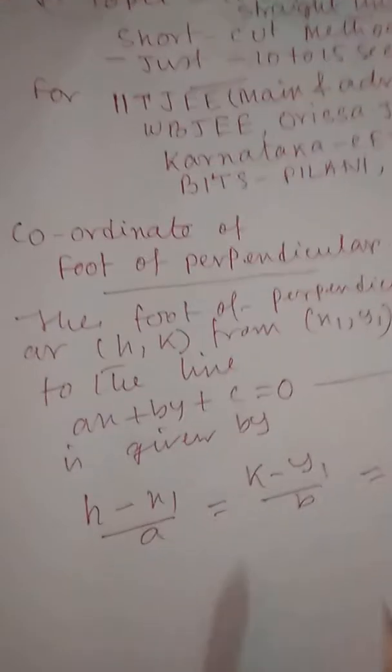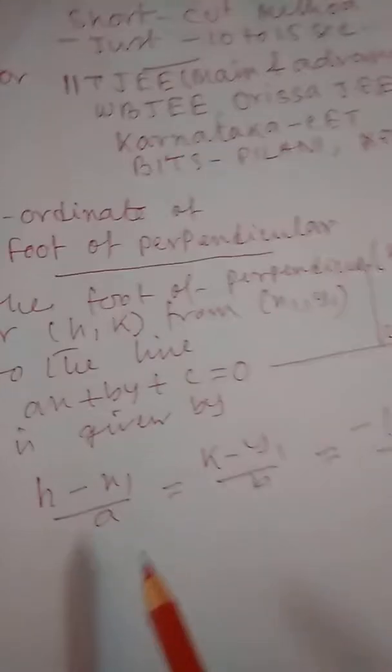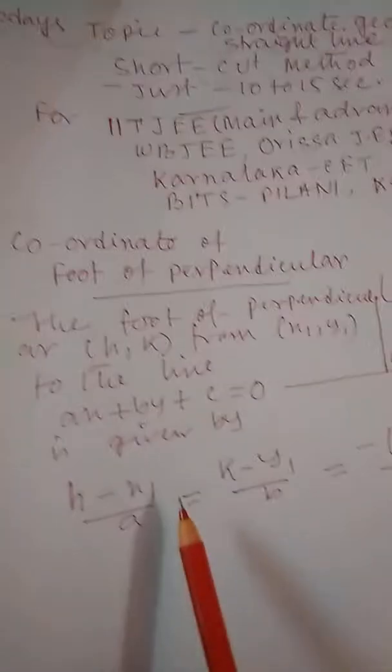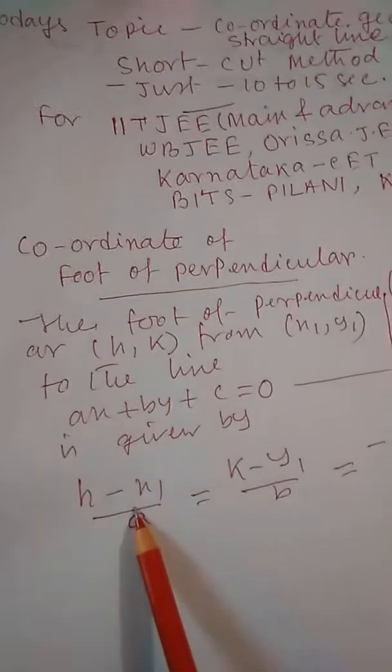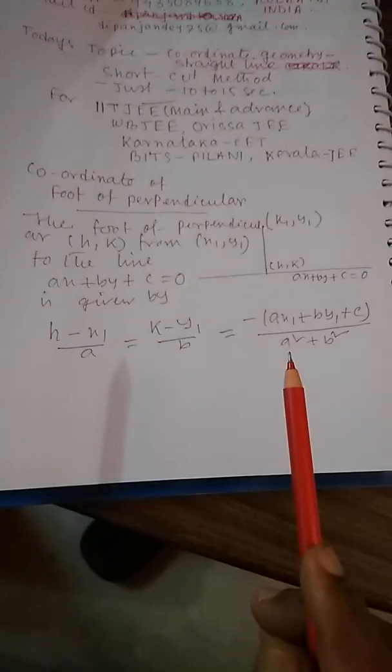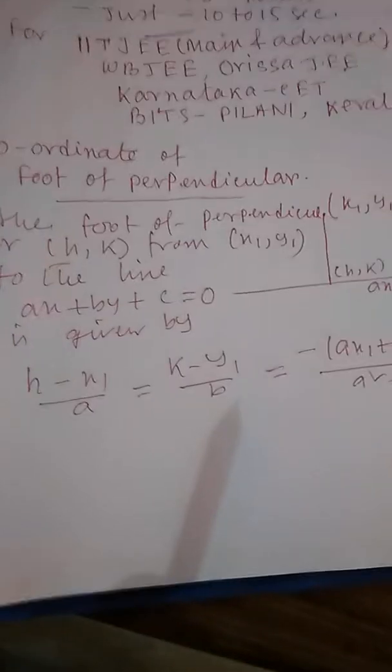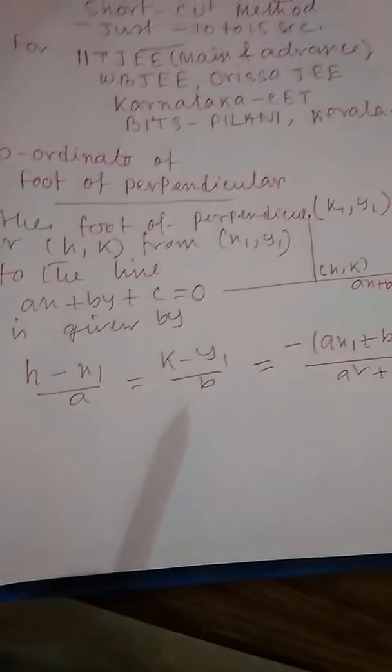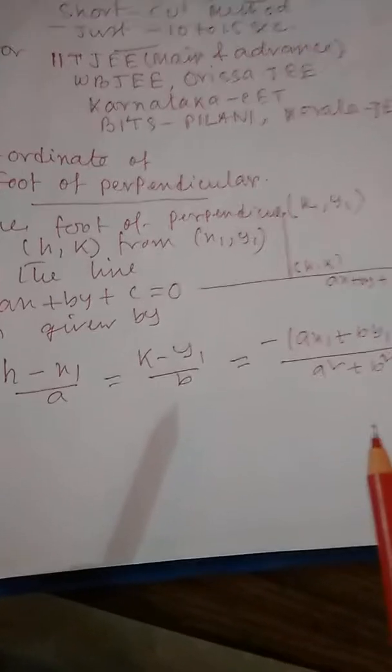So this is the formula. From this identity, you equate each part and find H and K very easily. (H, K) is the foot of perpendicular, and (X₁, Y₁) is the outside point to the line AX + BY + C = 0.